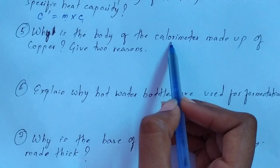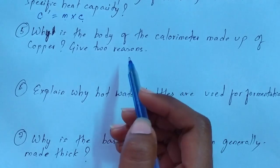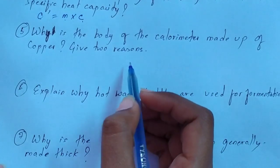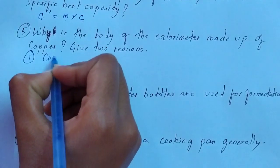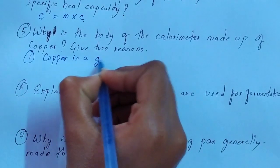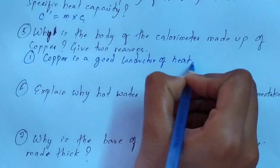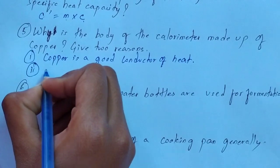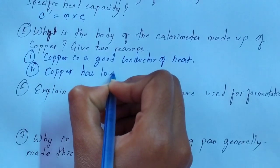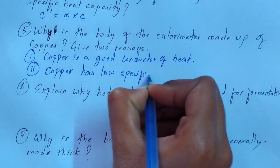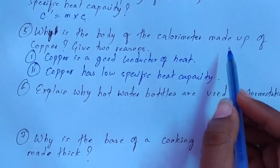Question number 5: why is the body of the calorimeter made up of copper? Give two reasons. The body of the calorimeter is made up of copper because: first, copper is a good conductor of heat; and second, copper has a low specific heat capacity. These are the two reasons why the calorimeter is made up of copper.